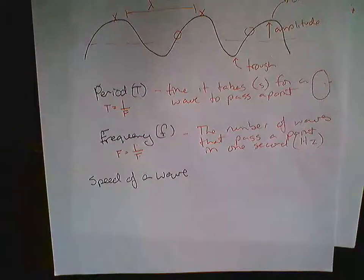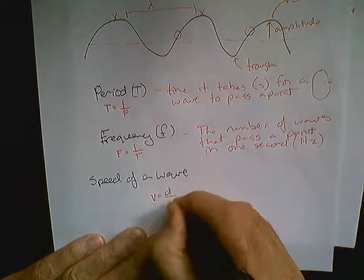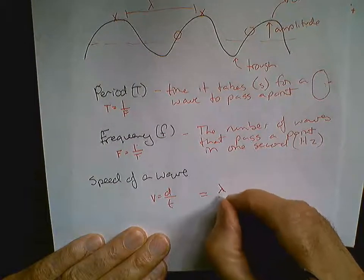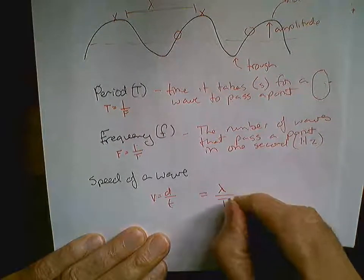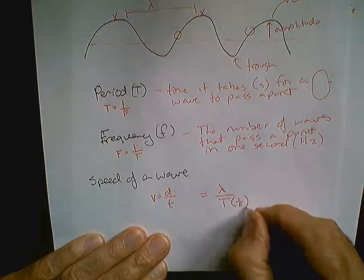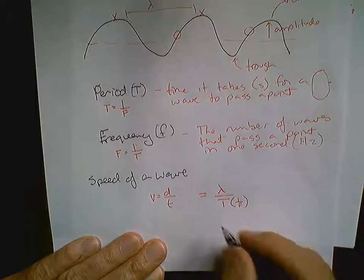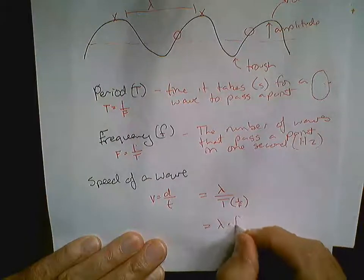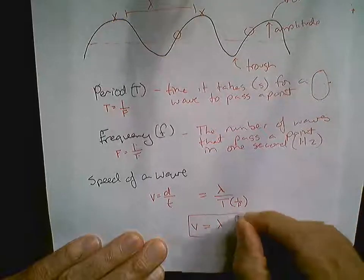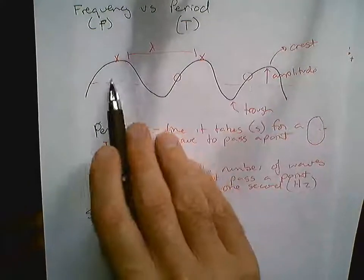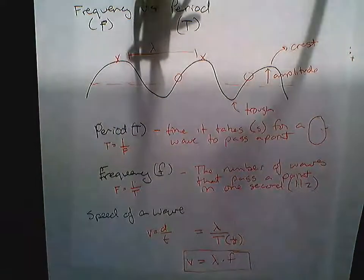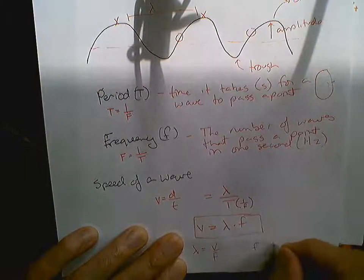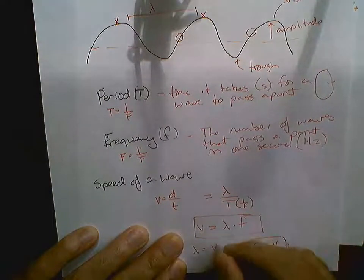If we wanted to take a look at the speed of a wave — speed is equal to distance over time. How do we get distance when looking at waves? It's the wavelength. How do we get time? Time is measured by the period, which is one over the frequency. So velocity is equal to lambda times f — the wavelength times the frequency equals the velocity of the wave. We can rearrange this formula to determine different things.